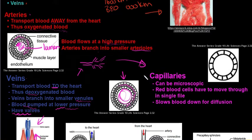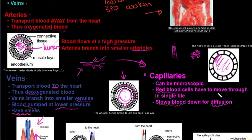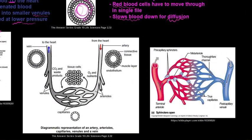Capillaries are the smallest blood vessels — they can be microscopically small and are made up of only one layer, the endothelium, plus a lumen. Because they are so microscopic, red blood cells have to move through in single file. This slows down the blood flow so that diffusion can happen. Capillaries branch off in between organs and different kinds of tissue so that an exchange of nutrients, oxygen, and carbon dioxide can take place.